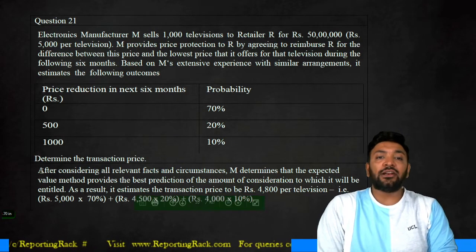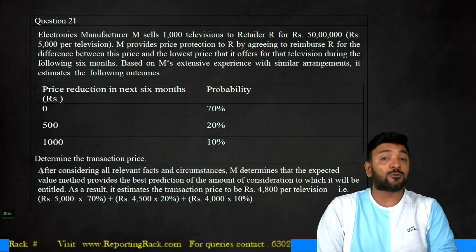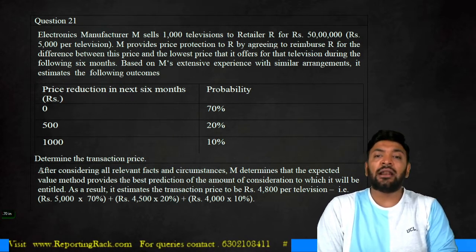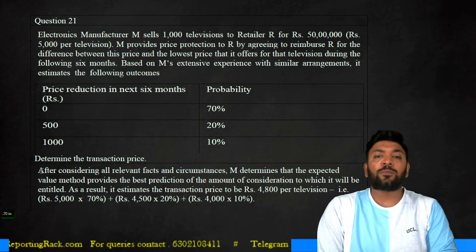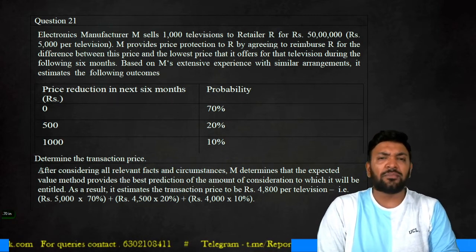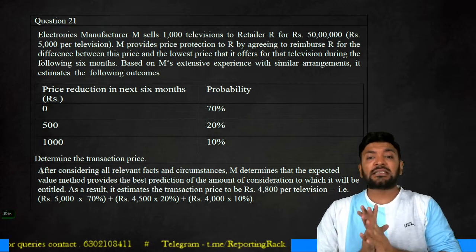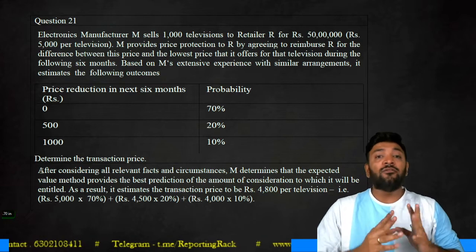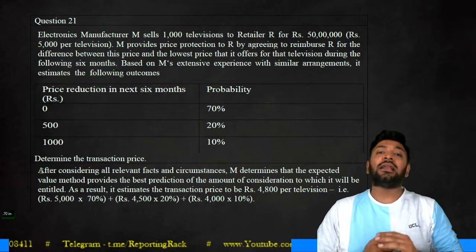Electronic manufacturer M sells 100 televisions to a retailer for 50 lakhs, which is 5000 rupees per television. M provides a price reduction to R by agreeing to reimburse R for the difference between the price and the lowest price that it offers for that television during the following six months — again, very similar to the previous question. Based on M's extensive experience in similar agreements, the following are the estimated outcomes. When there are multiple outcomes regarding a transaction price, there are two ways of determining the transaction price.